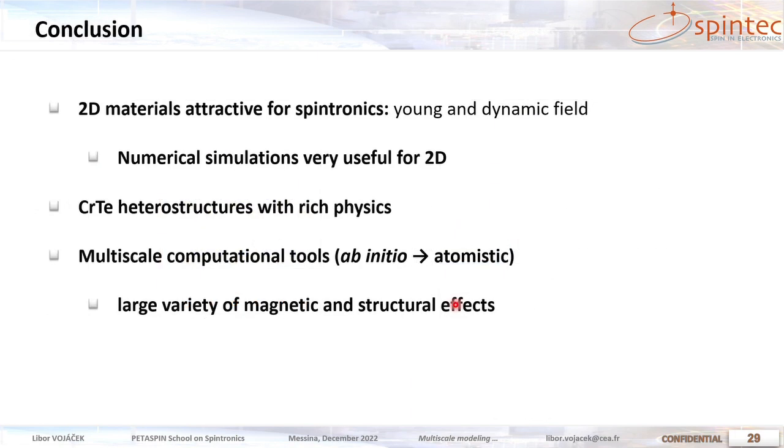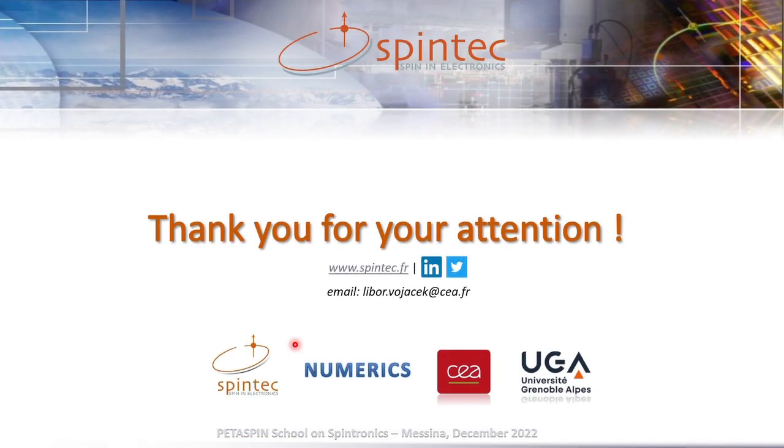So to conclude, 2D materials are very attractive for spintronics. And numerical simulations can help a lot. Because the experiments in 2D are often very challenging. So calculations can guide and explain phenomena. We see that chromium ditelluride indeed has very rich spintronic and magnetic physics. And we employed multiscale computation tools to calculate these effects, going from ab initio to atomistic simulations, where we can calculate the magnetic and structure properties. And with this I would like to thank you for your attention.